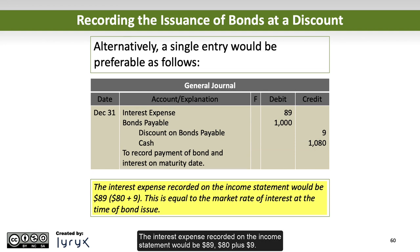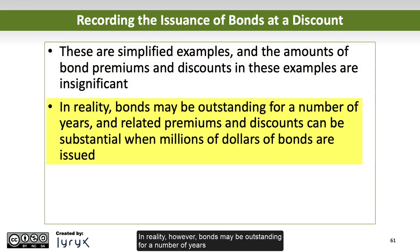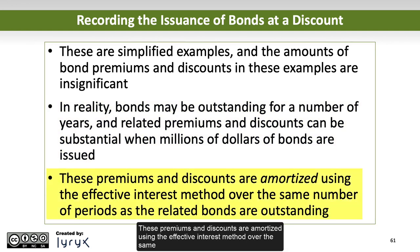The interest expense recorded on the income statement would be $89 — $80 plus $9 — equal to the market rate of interest at the time of bond issue. These are simplified examples, and the amounts of bond premiums and discounts in these examples are insignificant. In reality, bonds may be outstanding for a number of years, and related premiums and discounts can be substantial when millions of dollars of bonds are issued. These premiums and discounts are amortized using the effective interest method over the same number of periods as the related bonds are outstanding.